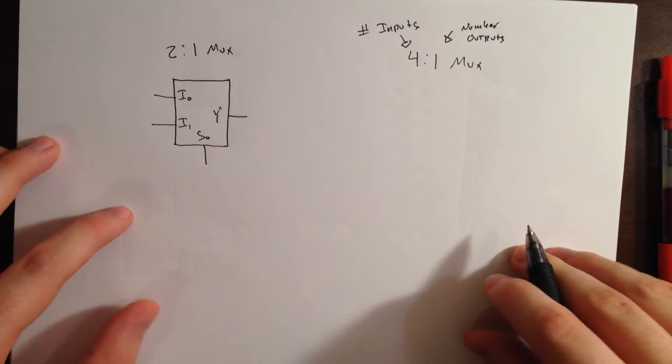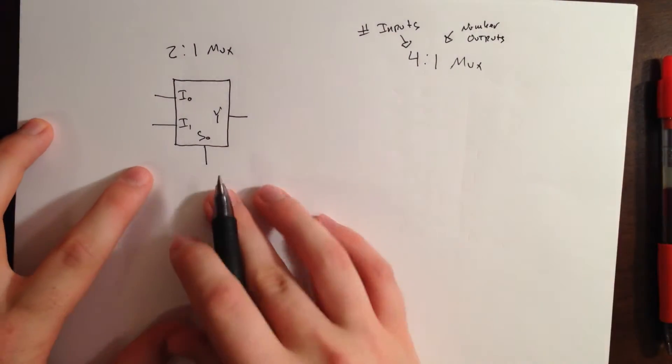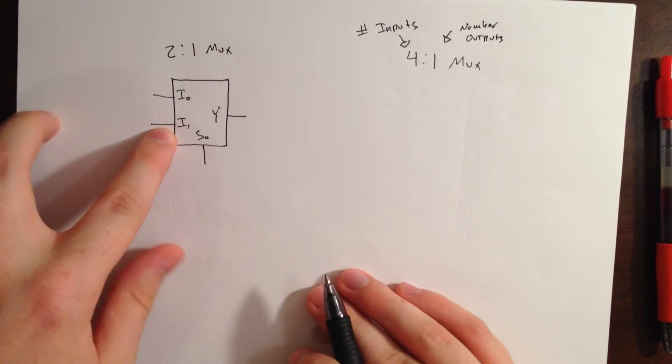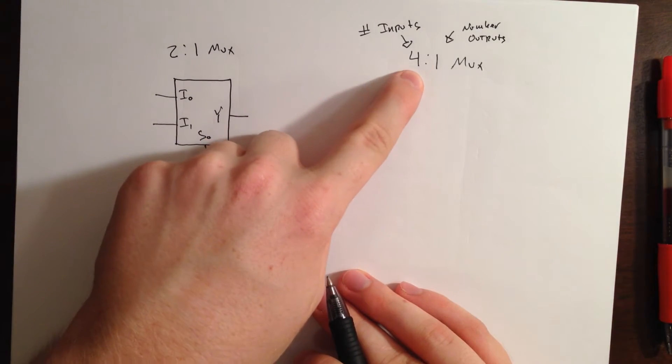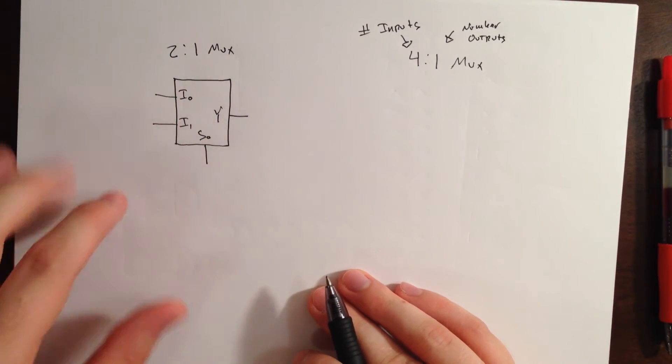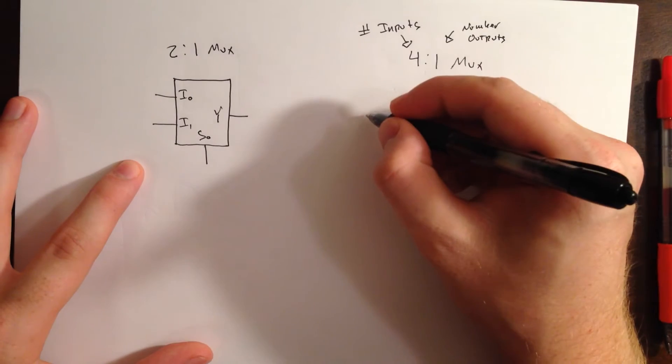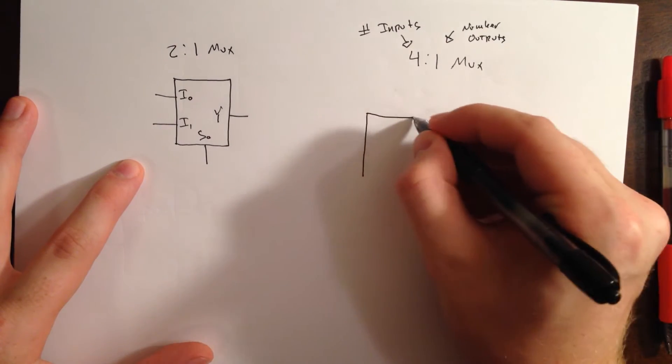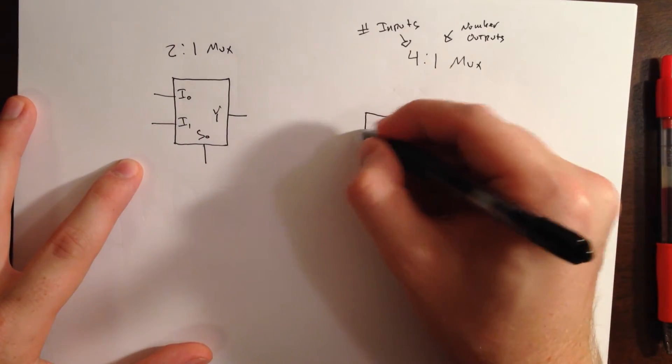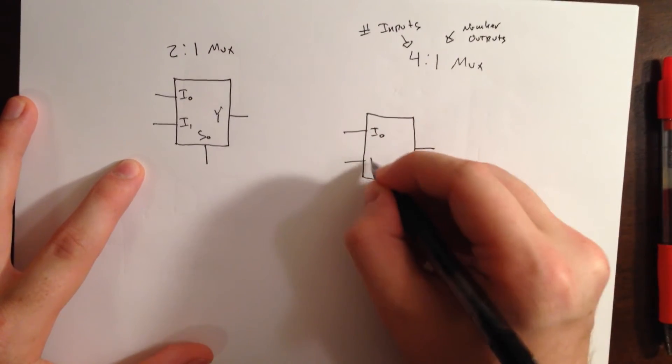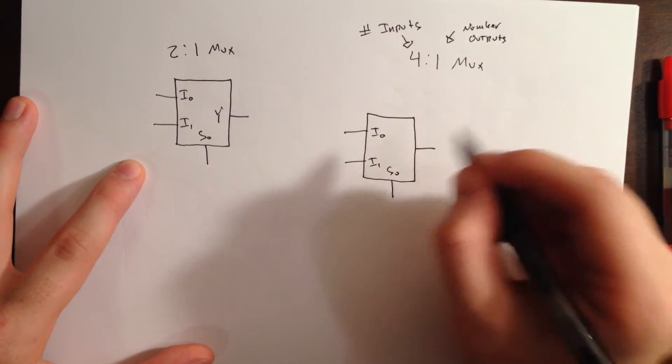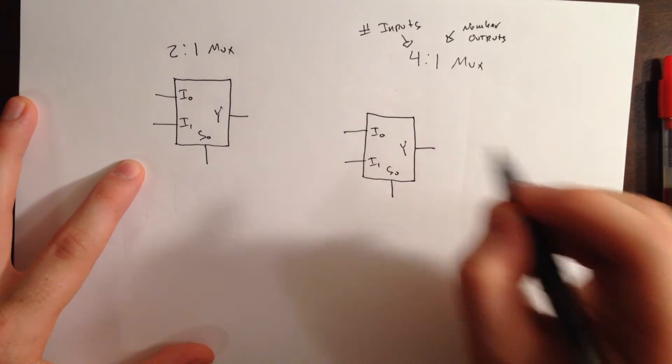Let's go ahead and look at our 2:1 multiplexor. We have 2 inputs and 1 output. So, to get 4 inputs, we'll need to start with 2 2:1 multiplexors. Let's build one. We'll call this I0, I1, S0, and Y.